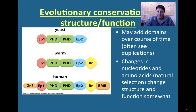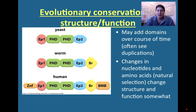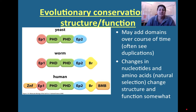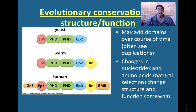Okay, cell biology fans, I'm going to finish our lecture about proteins and amino acids and then go on to the next lecture about membrane structure. We had left off talking about the evolutionary conservation of structure and function, showing this particular cartoon diagram in which we see the evolution from yeast to worm to humans of a protein which has similar functions, but as we go to the higher evolved species—human—we see that there are additional domains that get added.